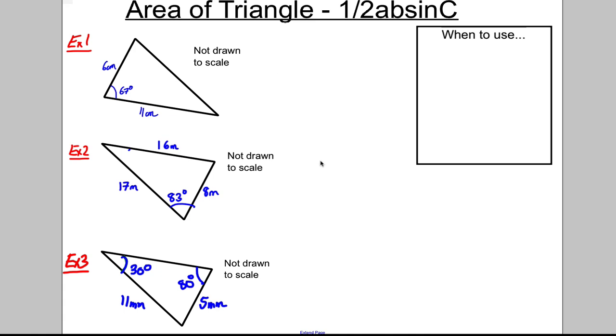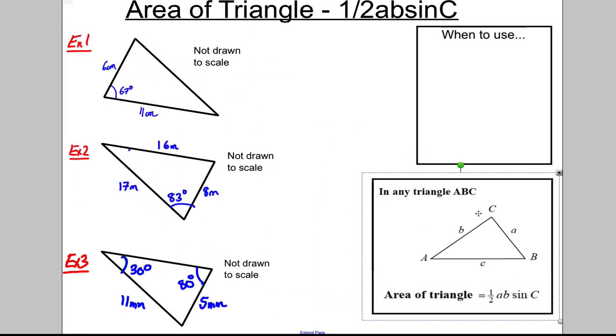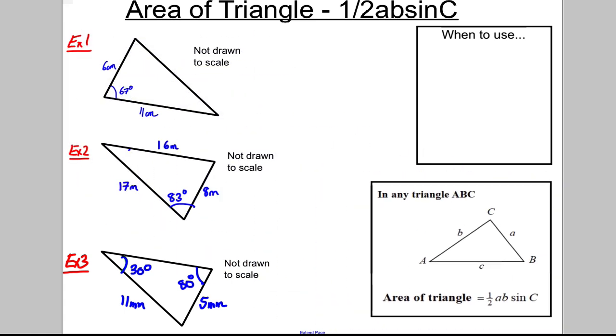We're talking about the area of a triangle using half AB sine C. Firstly, when do you use this and what is it? This is on the front of your formula booklet. It tells you for any triangle ABC with corners A, B, and C and side lengths little a, little b, and little c.